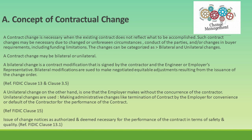Additionally, the issuance of change notices is authorized and deemed necessary for the performance of the contract in terms of safety and quality. FIDIC Clause 13.1 — Right to Vary — gives the engineer the authority to issue instructions for variations at any time before the completion of the works, ensuring that necessary adjustments can be made to enhance the project's success. By following the guidelines set out in these FIDIC clauses, both parties can ensure that changes are managed effectively and fairly.